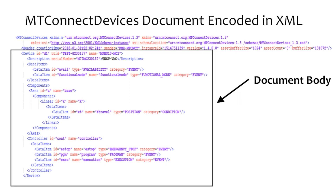The body section of the document contains the data and other information requested by the client software application, organized based on semantic data models defined in the MT-Connect standard. If the request was for metadata describing one or multiple pieces of equipment and the data that can be reported by that equipment, then the response document will be organized based on the semantic data model defined in part 2 of the standard, the Device's Information Model. The resulting response document is called the MT-Connect Devices Response Document.